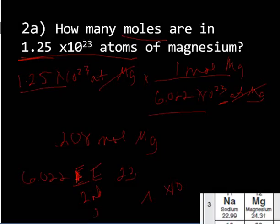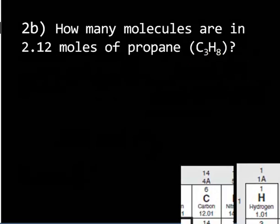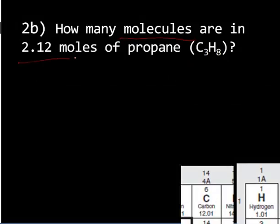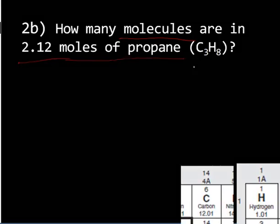Let's take a look at one going the other way. In this one we want to know how many molecules are in 2.12 moles of propane, which is C3H8. Nothing on the periodic table is helpful for us here. We're starting with 2.12 moles of propane and I'm trying to find molecules.